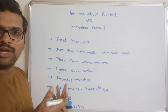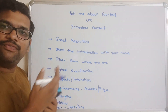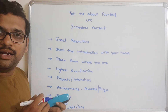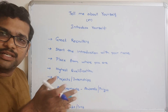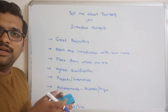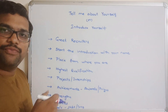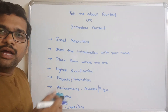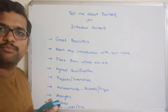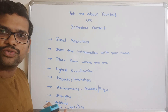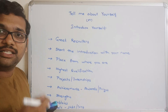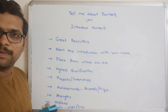Then mention your highest qualification. You might have a long academic career — after completing Plus 2 or intermediate, you may have completed your undergraduate and postgraduate degrees. That's why you just go with the highest qualification. For example: 'I have completed my master's degree from so-and-so college with so-and-so percentile.' If your percentile is high, you can also reveal that percentage.